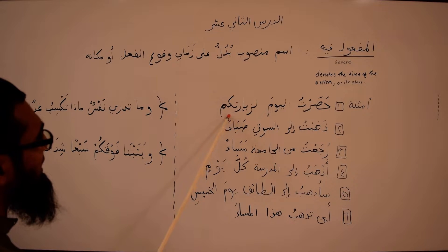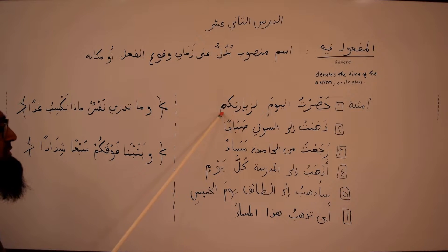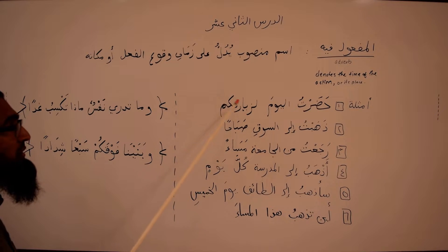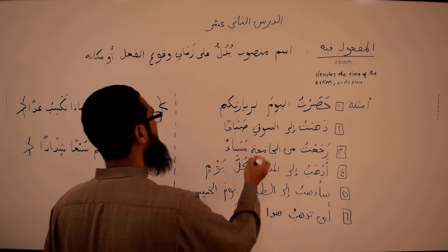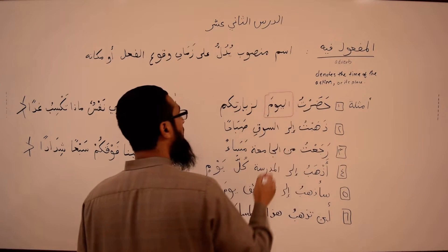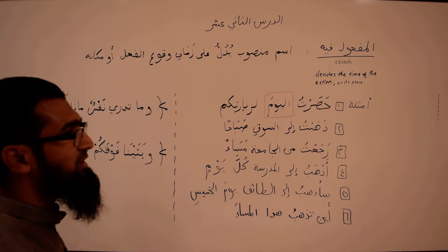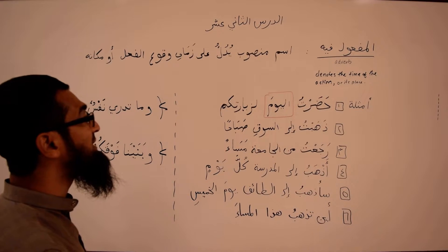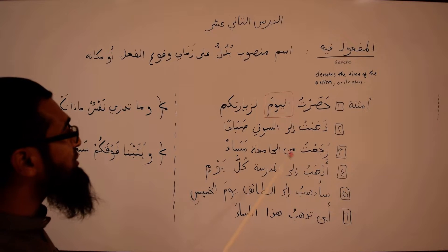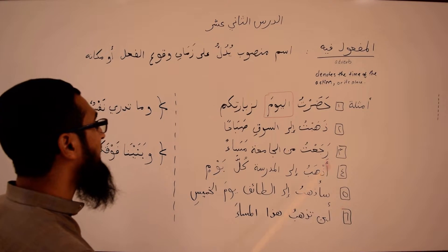The first example: حَضَرْتُ الْيَوْمَ لِزِيَارَتِكُمْ — I attended today for visiting you all. Focus on the word اليوم. اليوم is the مفعول فيه — it's telling you when the action took place. متى حضرت? When did I attend? حضرت اليوم — I attended today.